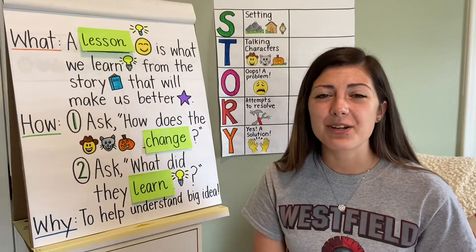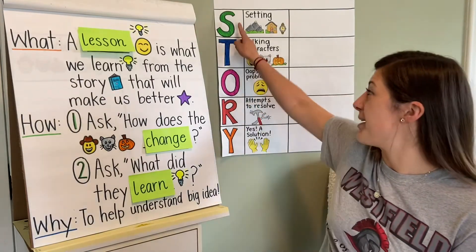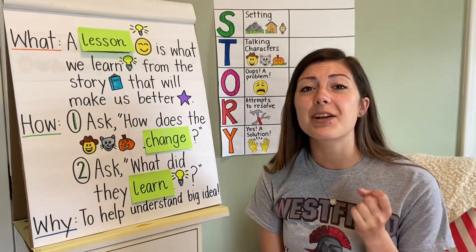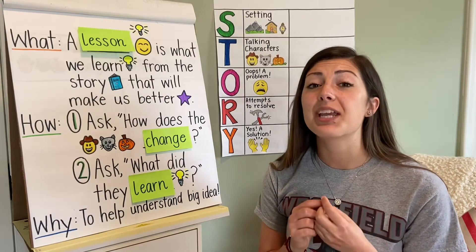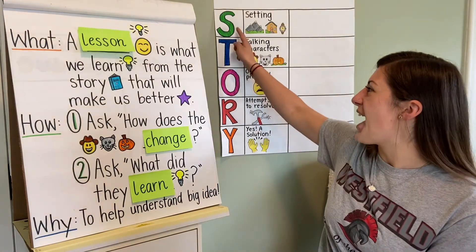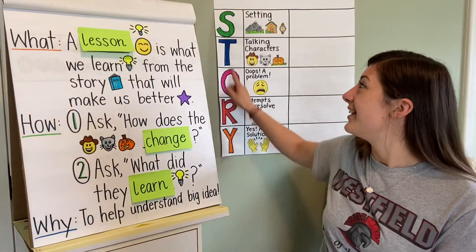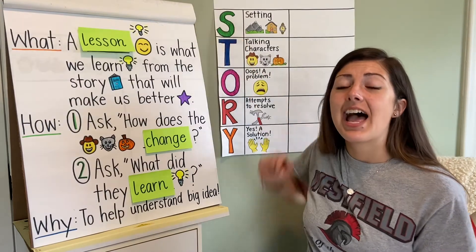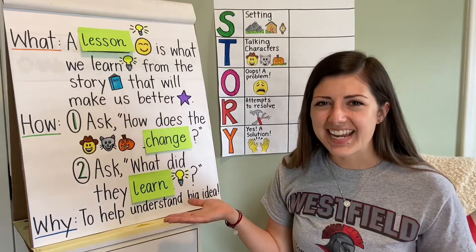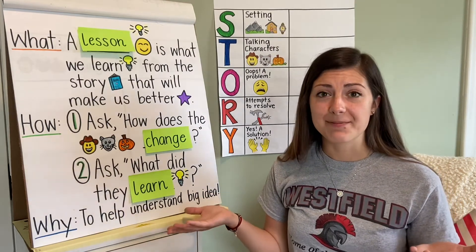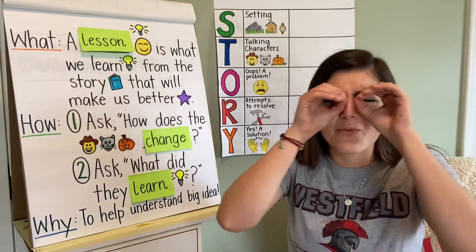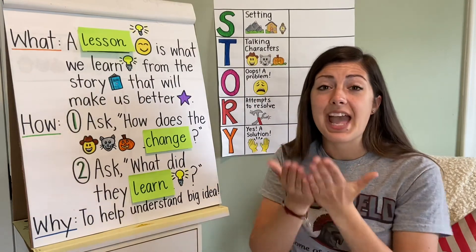The first one I want to review is our story elements. Since it is our last time doing this skill together, I'm going to ask you what each letter means and what each word means, because I think you can do it. In our story we have S-T-O-R-Y. Let's start with our S. S stands for setting. And what is a setting? A setting is where and when our story happens.